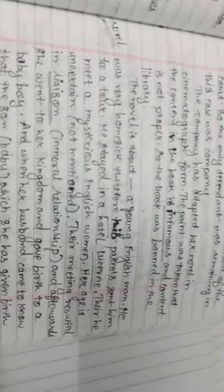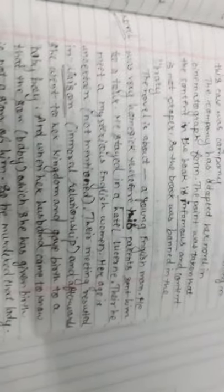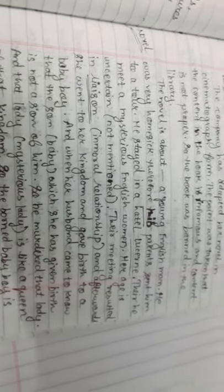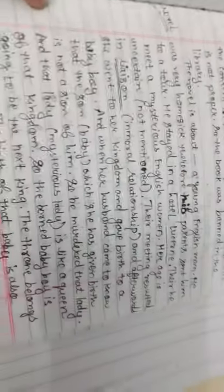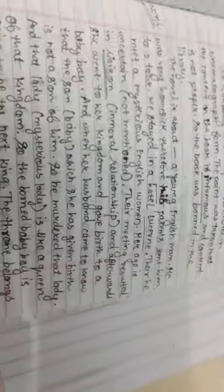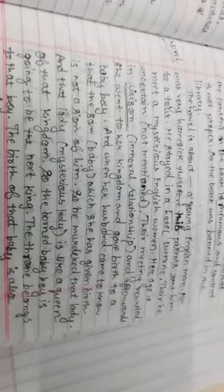The novel is about a young Englishman who was very homesick. His parents sent him on a tour where he stayed in a hotel in Lucerne. There he met a mysterious English woman whose age is uncertain. Their meeting resulted in a liaison, which means an immoral relationship.